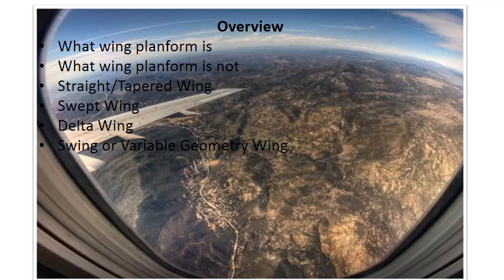Then we're going to look at swept wings. We're only going to cover rearward swept wings today — there's also forward swept, but that's another complicated topic. Then we're going to take a look at delta wings, and also swing or variable geometry wings briefly.